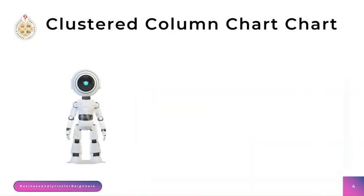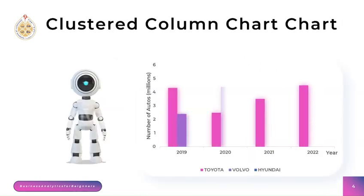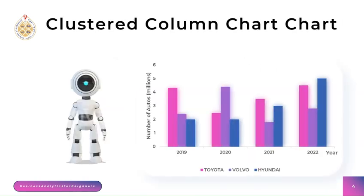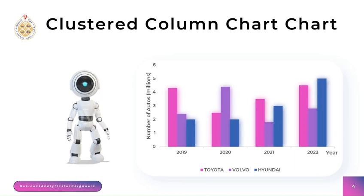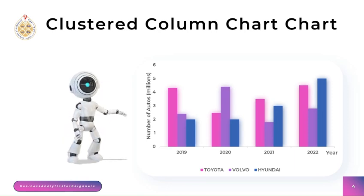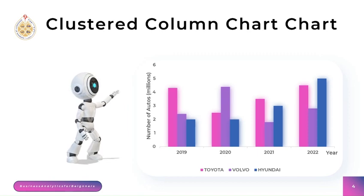On the other hand, a clustered column chart is a chart where vertical columns represent different groups, and the height of each column represents the value or magnitude of a specific variable. The main difference between a clustered column chart and a clustered bar chart is the orientation of the bars or columns.